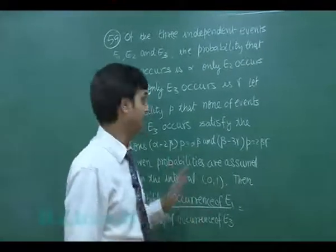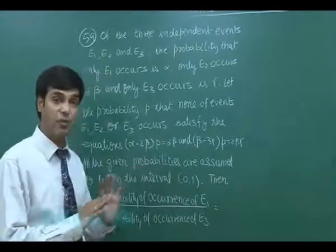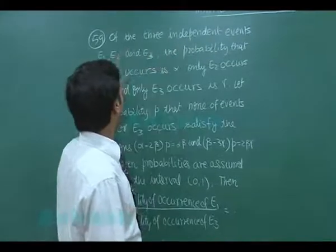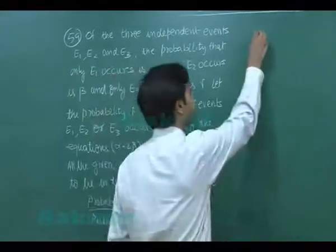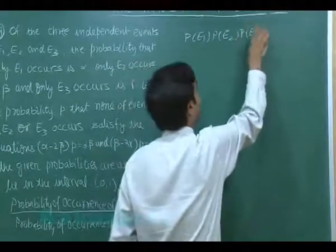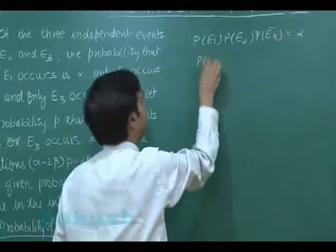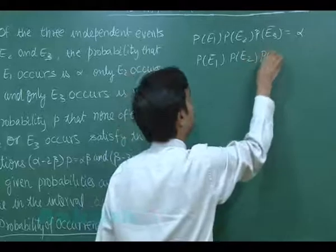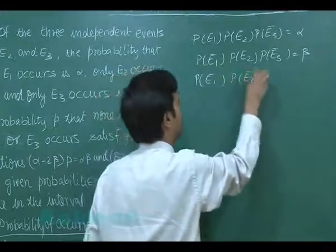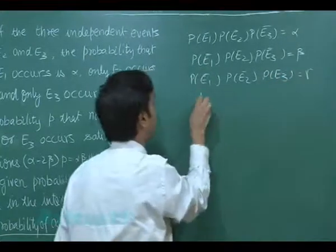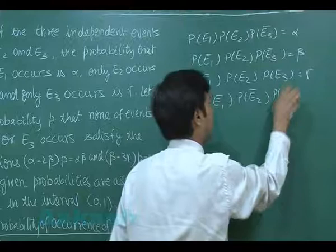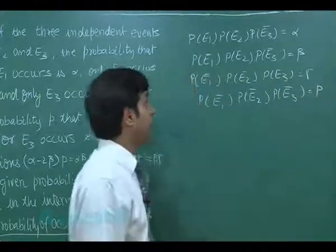We have some equations and unknowns, and we need to manipulate from one equation to another to get the solution. Alpha, the probability that only E1 occurs, means P(E1) * P(E2_bar) * P(E3_bar) = alpha. Similarly, P(E1_bar) * P(E2) * P(E3_bar) = beta, P(E1_bar) * P(E2_bar) * P(E3) = gamma, and P(E1_bar) * P(E2_bar) * P(E3_bar) = p.